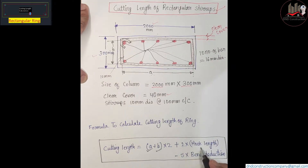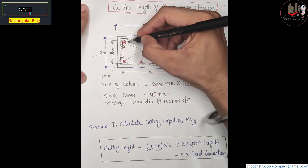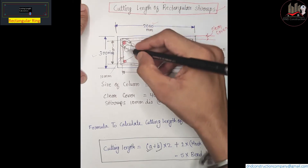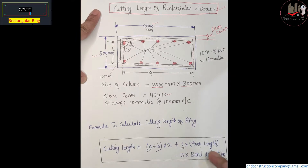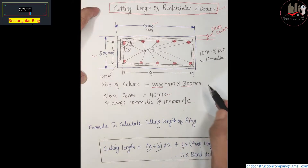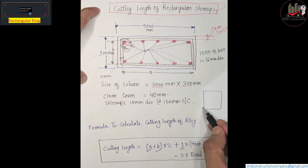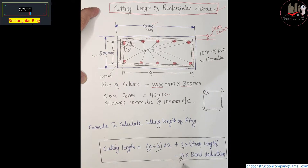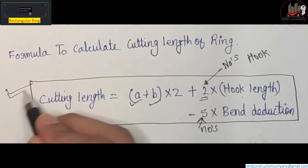Then we add 2 hook lengths — there are two hooks on the ring, so we take 2 times the hook length. We also apply bend deduction. When we make the ring, we have 5 bends: bend one, two, three, four, and five. That is why we take 5 numbers of bend deductions.